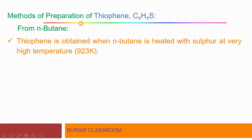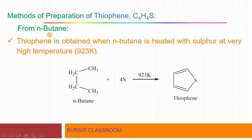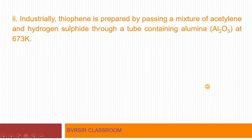Let us start with the methods of preparation. A very easy method of preparing thiophene is from n-butane. Thiophene is obtained when n-butane is heated with sulfur at a very high temperature of 923 K. This is a convenient method — simply mix normal butane with sulfur and heat it to get thiophene.